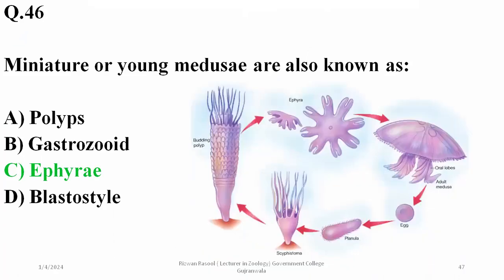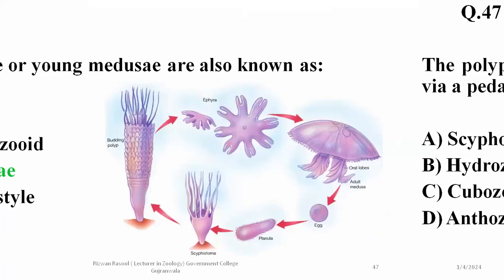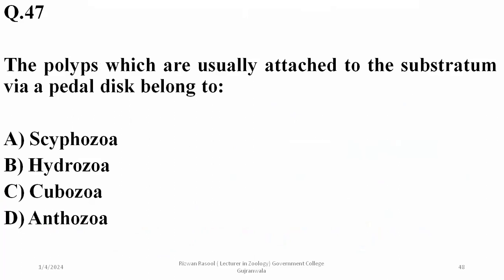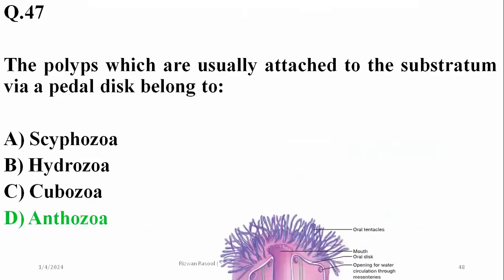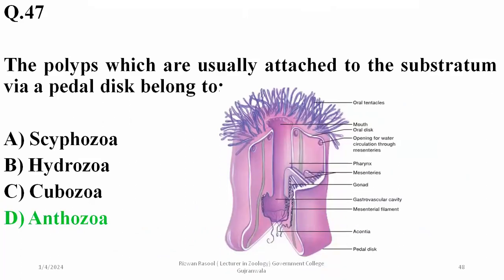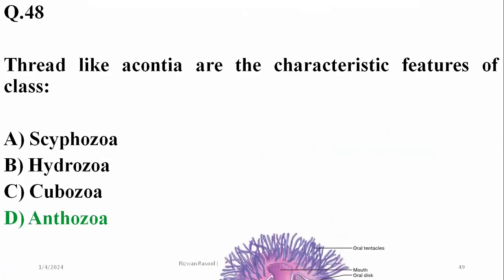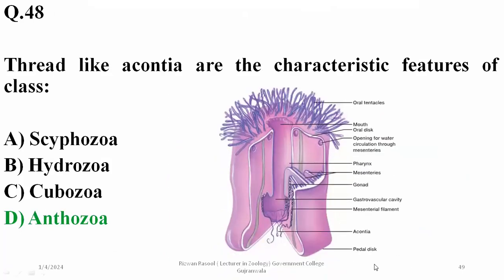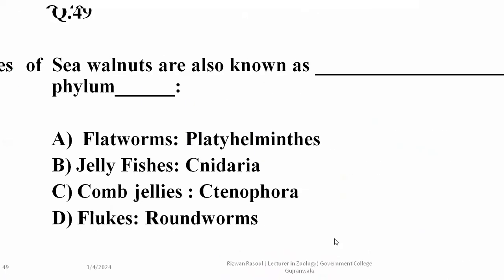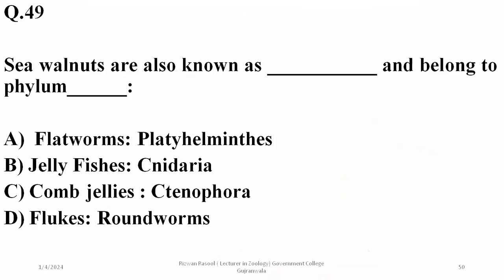Polyps that are usually attached to the substratum by a pedal disc belong to Anthozoa, such as corals and sea anemones — the pedal disc is visible in the diagram. Thread-like acontia are also found in class Anthozoa, as seen in the same diagram as hanging thread-like structures.